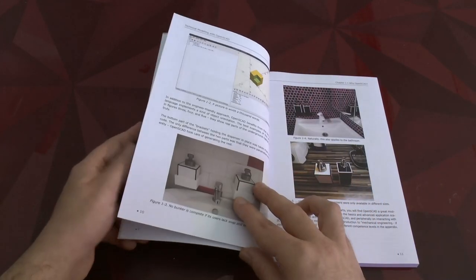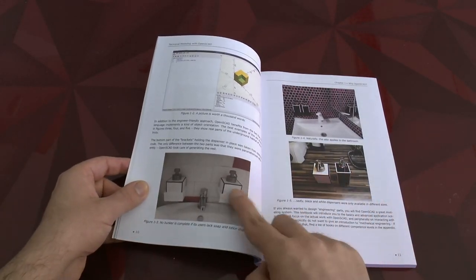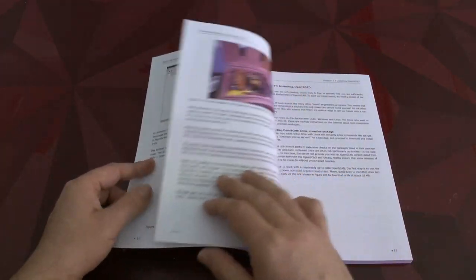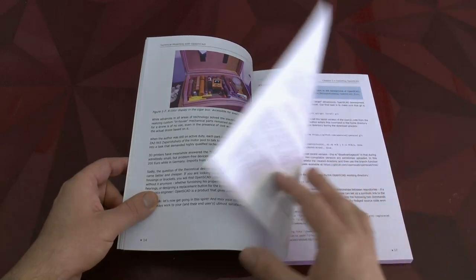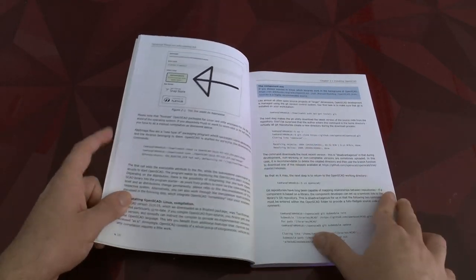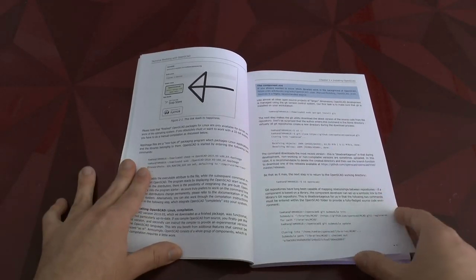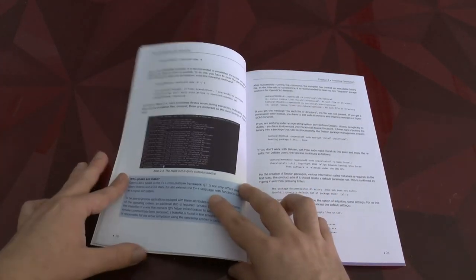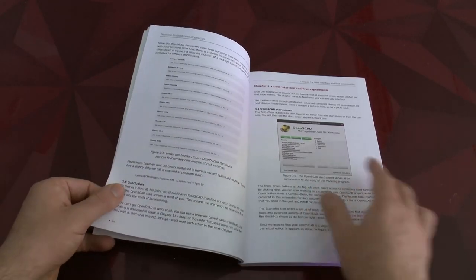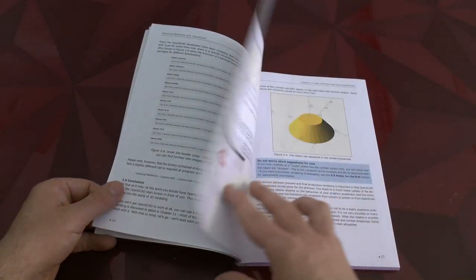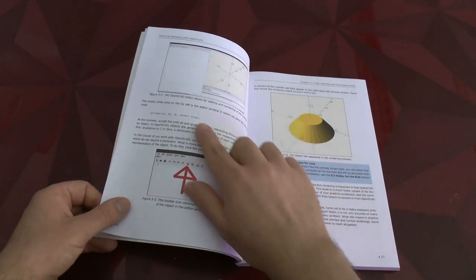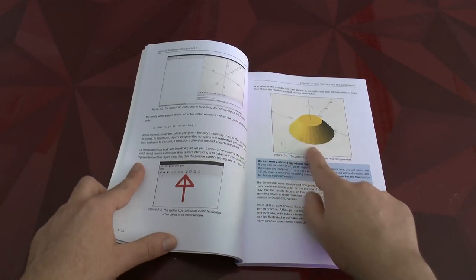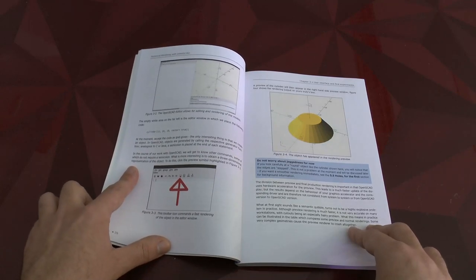To get started you see here we've got some practical examples from my property, soap holders, all this kind of stuff. And then you see here the installation. We're installing OpenSCAD both on Linux and also on Windows and then it's already time to get started with the product. You see here we are coding and then we render the code and the code then becomes a 3D object.